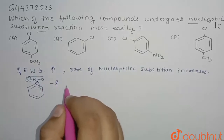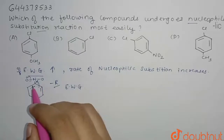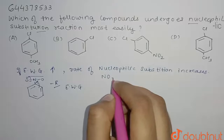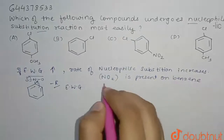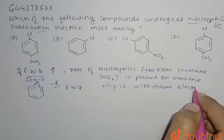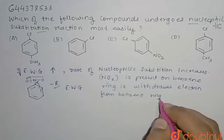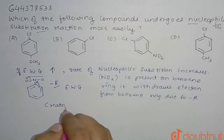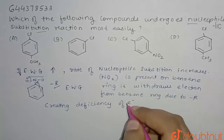The electron withdrawing group like NO2, due to resonance, creates a deficiency of electrons. When NO2 is present on the benzene ring, it withdraws electrons from the benzene ring due to the minus-R effect, creating deficiency of electrons on ortho and para positions.